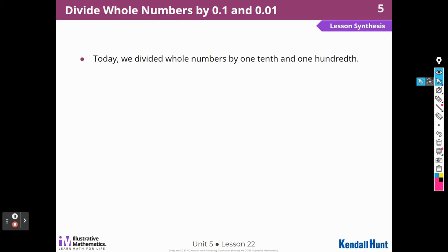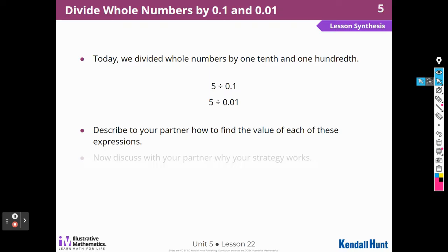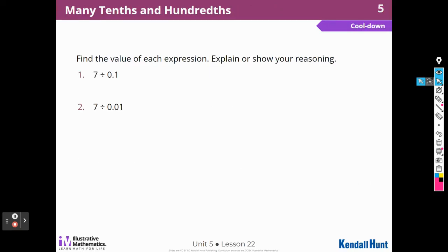Today we divided whole numbers by one tenth and one hundredth. Super easy, isn't it? Five divided by one tenth is the same as five times ten. And five divided by one hundredth is the same as five times one hundred. Because there are ten tenths in one and there are a hundred hundredths in one. So now we're going to start the cool down.